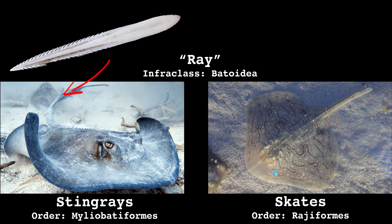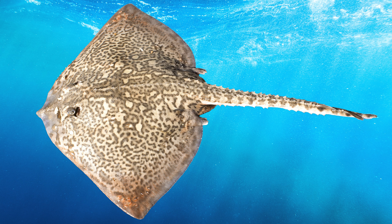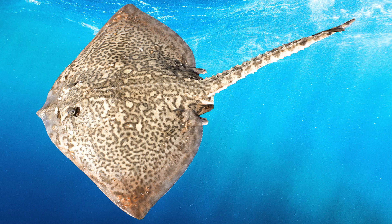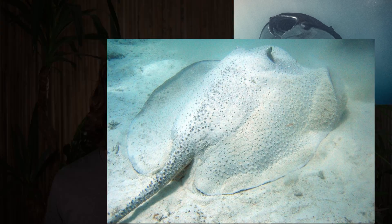Skates lack stingers, but many have small thorny bumps on their back and tail. Additionally, skates tend to have thicker tails than stingrays, which they can use like a club to bonk away potential predators. While you can know for certain that every flat cartilaginous fish with a stinger is a stingray, the same can't be said in reverse, because some stingrays don't have stingers — like manta rays and porcupine rays. Porcupine rays add another layer of confusion by also having a thick tail covered in small thorns. We impose rules onto nature, and nature laughs.